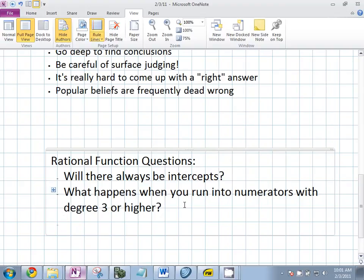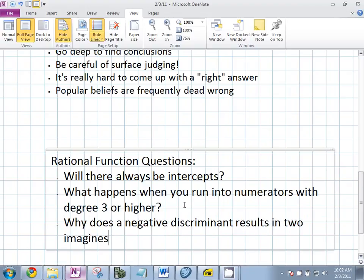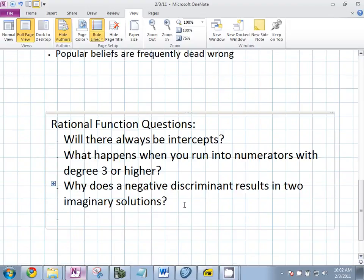Why is it when the discriminant, B squared minus 4AC, why is that when that's less than zero, two imaginary solutions? Why does a negative discriminant result in two imaginary solutions? Good. Good question. I like that.